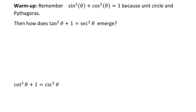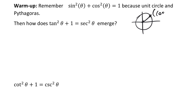In this video, we're going to continue our study of trig identities and look a little bit closer. Remember, we had sine squared theta plus cos squared theta equals 1. We said this was because of the unit circle and Pythagoras. If we just do a quick recap, we remember on the unit circle that any point will have the coordinates cos theta, sine theta.